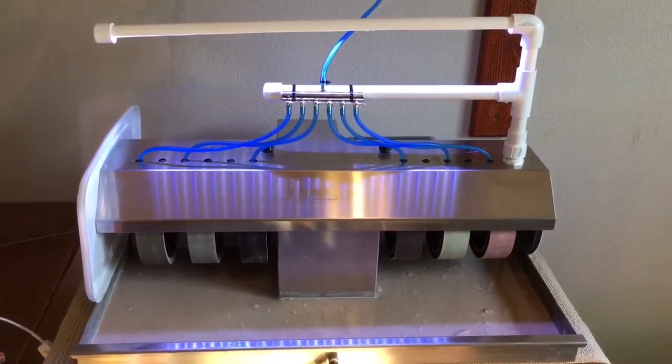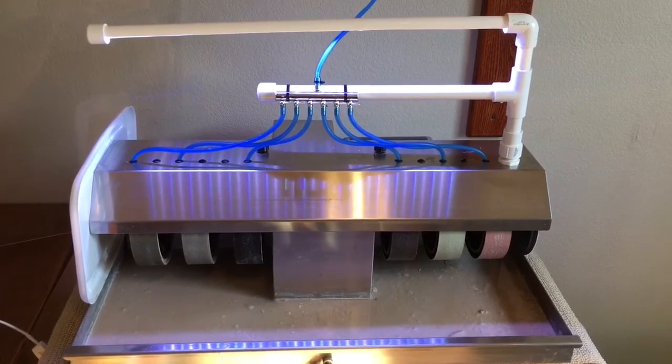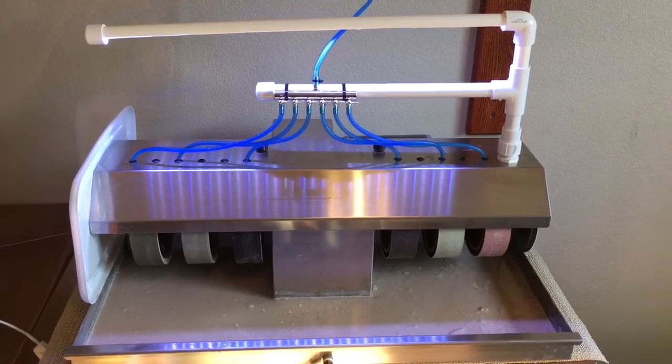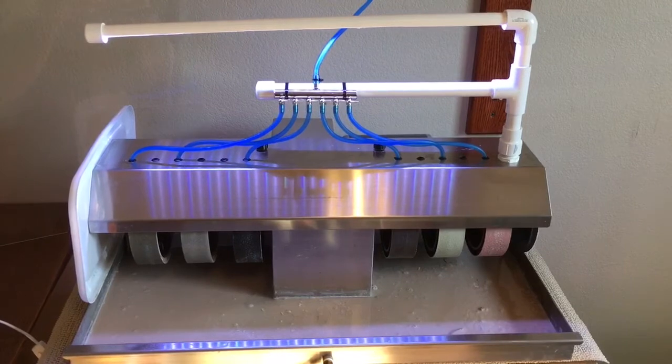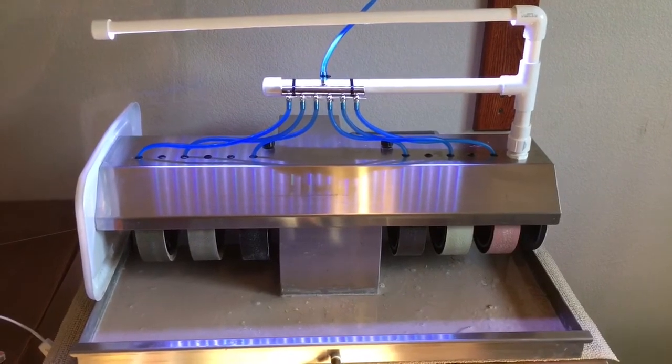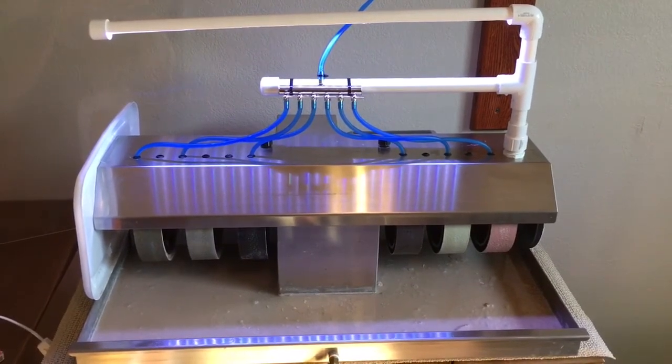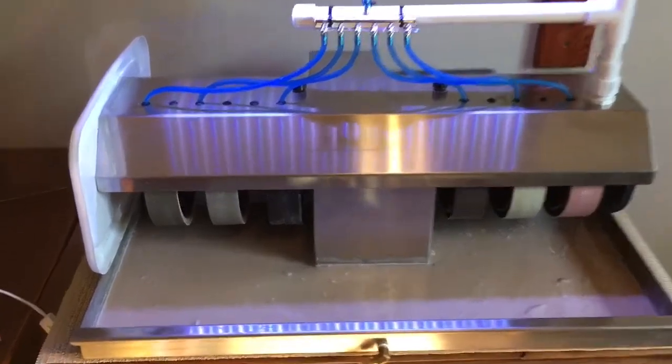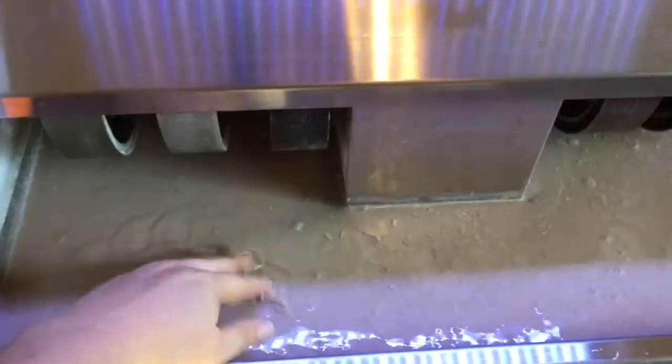I'm going to show you how I made my LED lighted drip system for my cabbing machine. It keeps your wheels in good order to have nice clean water flowing through instead of using the spitter system that just recycles old funky water.